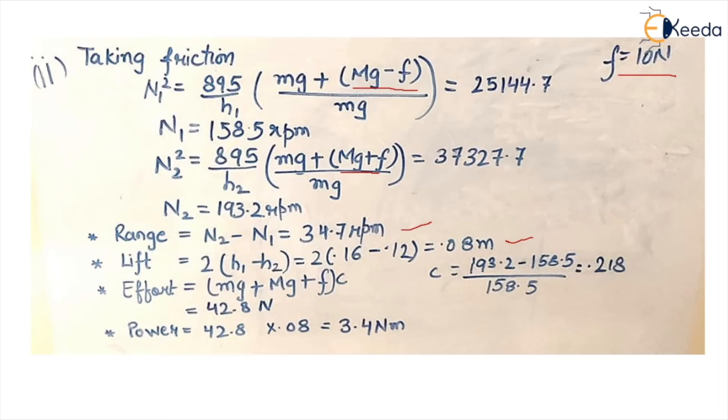Now for effort, because there is one more force, frictional force added, so effort changes. Along with this, the factor C also changes, the change which is change in speed upon original speed. So we can put the values of n2 and n1 in the formula which is n2 minus n1 upon n1 and get new value of change of speed which is C. So effort is weight of ball plus weight of sleeve plus frictional force and power is effort into displacement. We replace the values and get the answer.